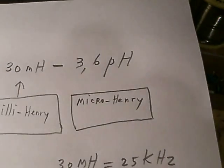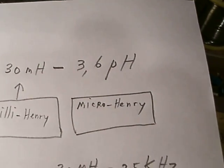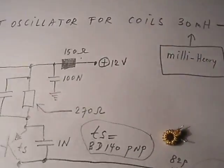When you have a coil with a lower inductance than 3.6 µH, the oscillator will not function.